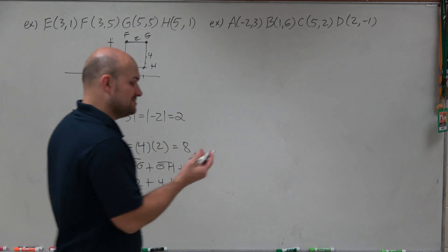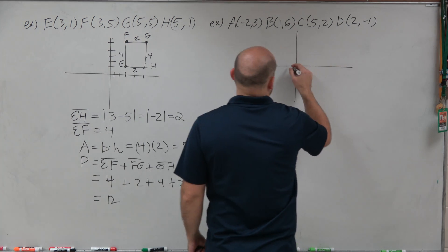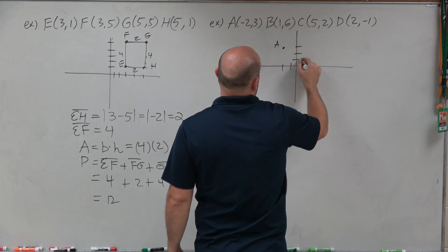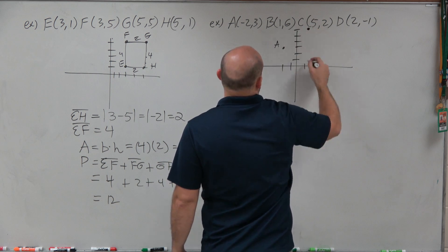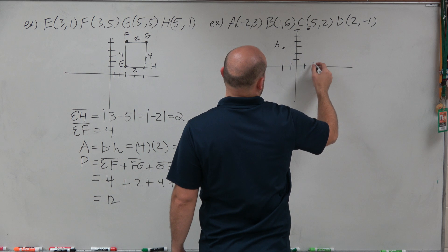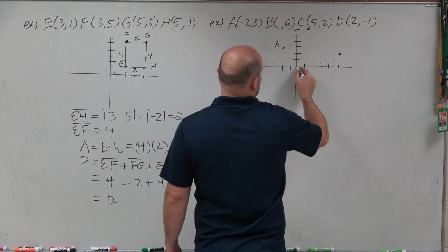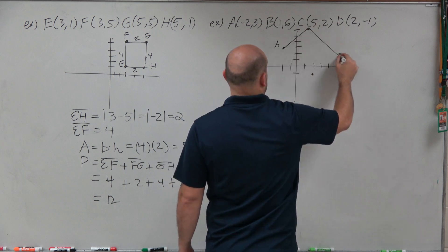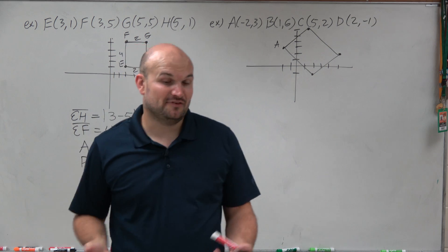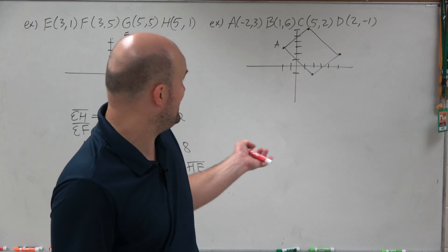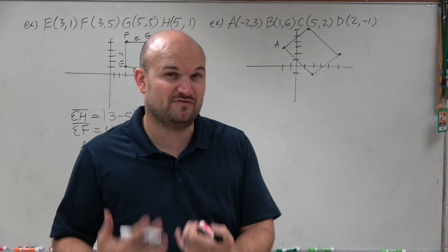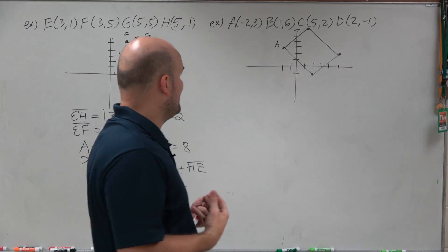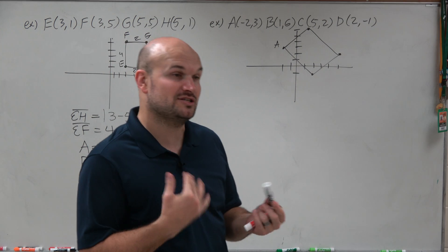We have the points A, B, C, and D. Let's plot them up. A is at (-2, 3). B is at (1, 6). C is at (5, 2). And D is at (2, -1). Now, you've got to be careful, especially when you're graphing this, because it looks like a rectangle, but it kind of looks a little tilted. I'm not very sure if I'm exactly dealing with a rectangle or not.